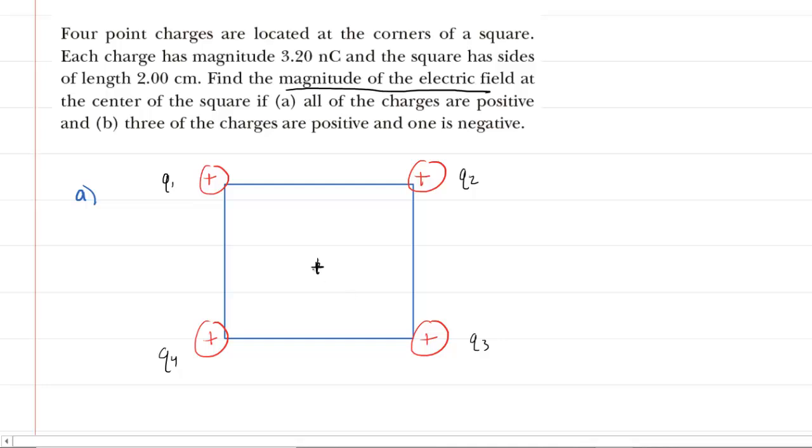And we all know that opposite charges repel one another. So this positive test charge would be repelled by the charge marked Q1, because Q1 itself is positive. Therefore, the electric field would point away from Q1. So we could label that field E1, and that would complete the direction for E1.